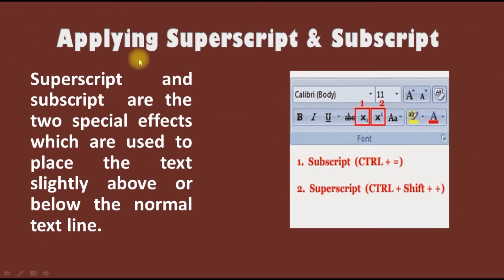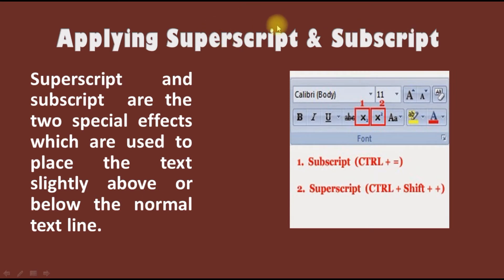Next slide is about how to apply superscript and subscript in MS Word. Superscript and subscript are two special effects which are used to place a text slightly above or below the normal text line. The keyboard shortcut for subscript is Ctrl plus equal sign, and the keyboard shortcut for superscript is Ctrl plus Shift plus plus sign.